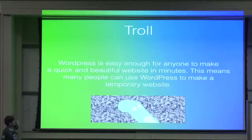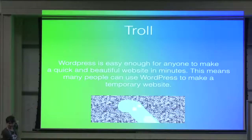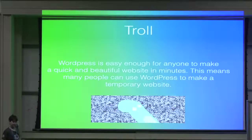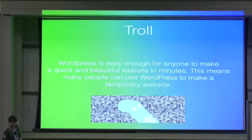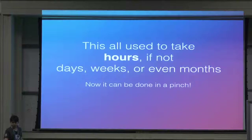And then, Troll. One of the beauties about WordPress is how quick it is. They have the five-minute installation, along with the ability to just jump right in after you choose a theme. This means it is completely realistic to create a temporary website using a .tk domain or other free domain to do something completely entertaining for no reason, and it may only stay up for 24 hours. Part of the beauty of WordPress is that it can be created by anyone with an idea. All of this used to take hours, if not days, weeks, or even months. Now, with the amazing tools that WordPress provides, it can all be done in a pinch.